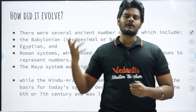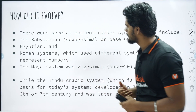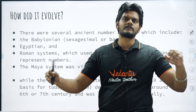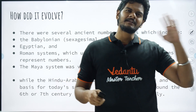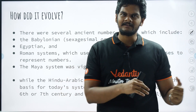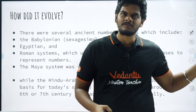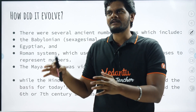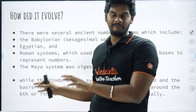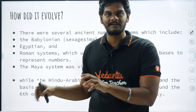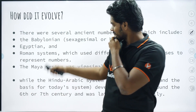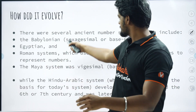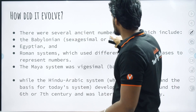Now, how did numbers evolve? There were several number systems developed in the world independently, because the world in ancient times was not as connected as now. Traveling through sea and all developed much later. So the number system had developed much, much earlier in different parts of the world in different ways. For example, the ancient Babylonians used base 60.